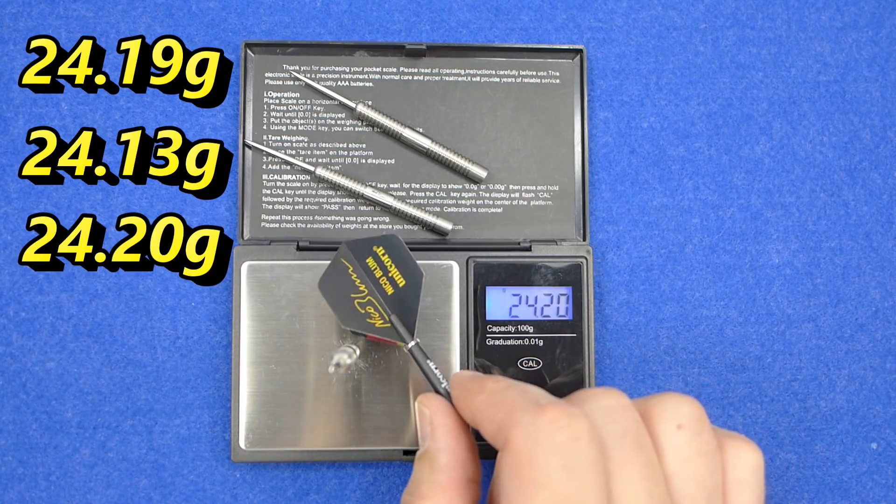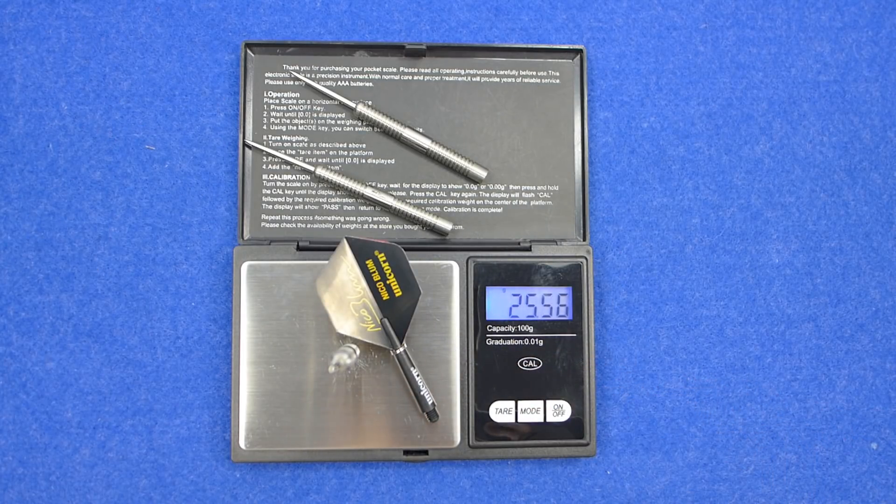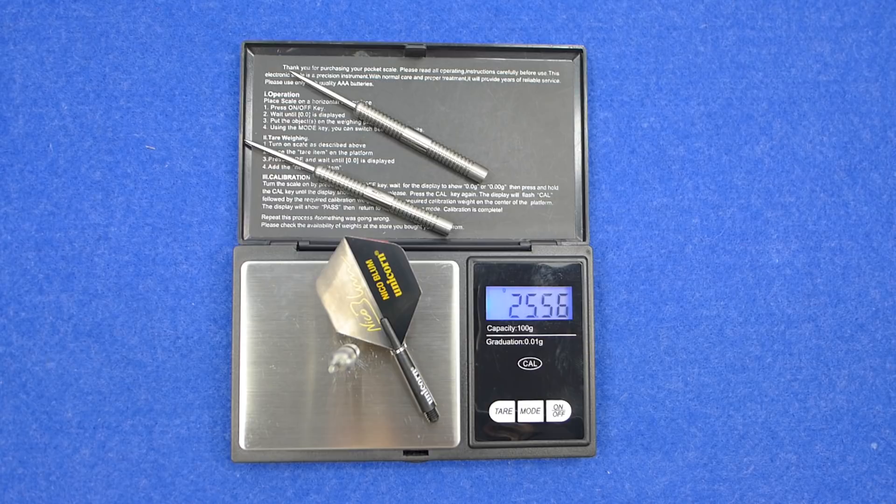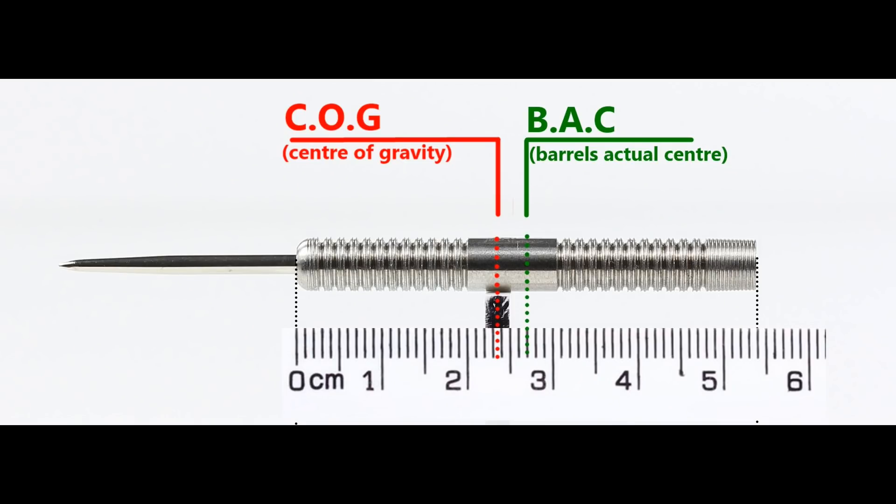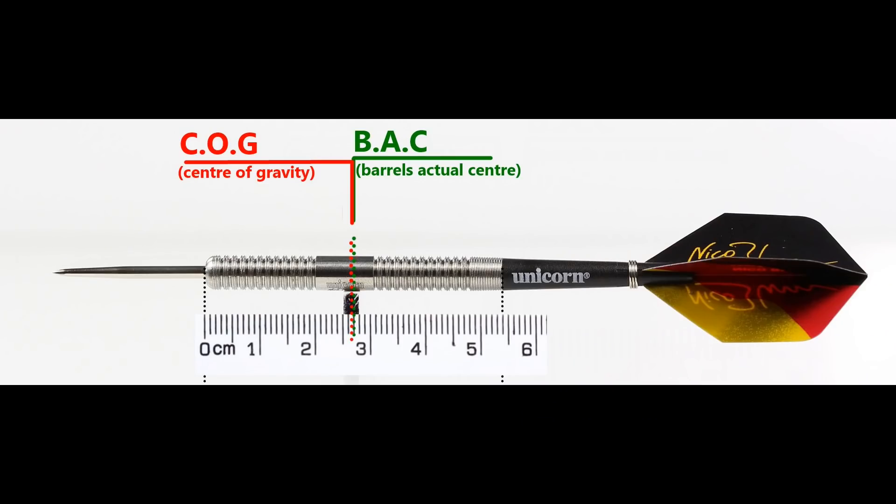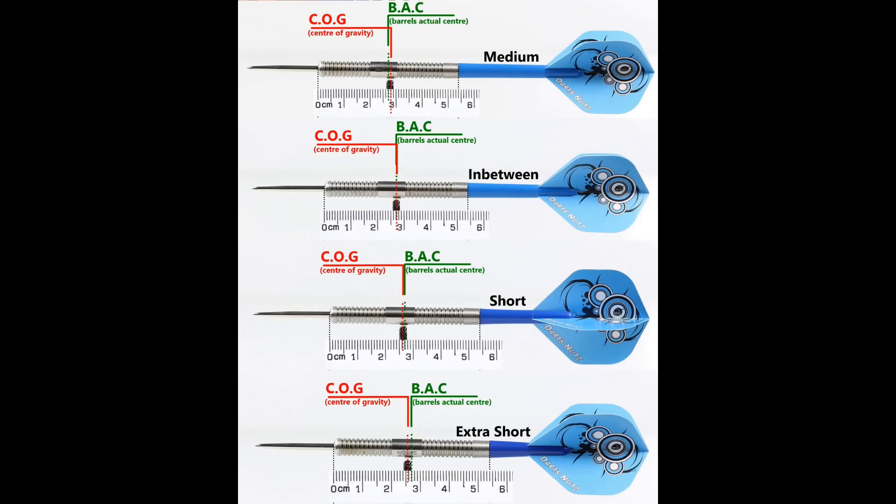Average 24.2 grams. The full setup is 25.56 grams. At 24.2 grams with nothing attached, the balance is a little towards the front. With the supplied setup it moves right into the center. This is the balance with medium, in between short and extra short stems.